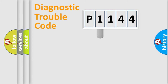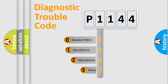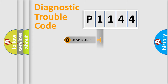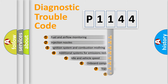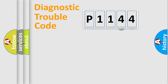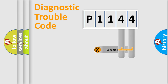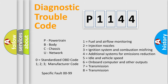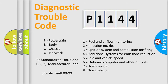This distribution is defined in the first character of the code. If the second character is expressed as zero, it is a standardized error. In the case of numbers 1, 2, or 3, it is a manufacturer-specific error. The third character specifies a subset of errors. Only the last two characters define the specific fault of the group, and this division is valid only when the second character is zero.